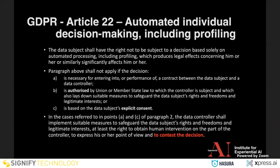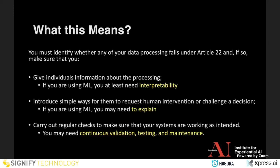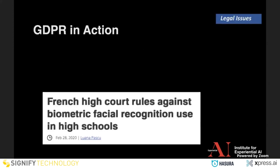Looking at Article 22 of GDPR, the last paragraph says that a person can contest the decision. This means you may need interpretability to give people information about the processing, explainability to challenge the decision, and validation, testing, and maintenance to keep the system working as intended. An interesting example of how Article 22 has already been used legally: in France, a court said that using facial recognition in schools was unconstitutional because they didn't have the competence, didn't have consent of the people, and the solution was not proportional to the goal.